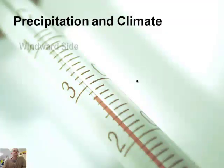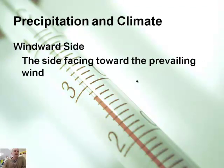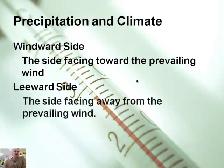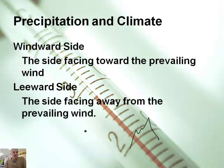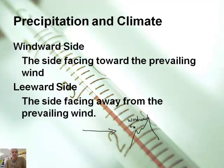There are a couple of terms we need to define. The windward side is the side of a mountain facing toward the prevailing wind. And the leeward side is the side facing away from the prevailing wind. So if I have a mountain range and the prevailing wind is from left to right, the left side is called the windward side, and the right side is the leeward side.